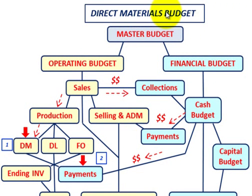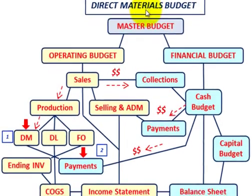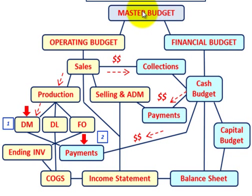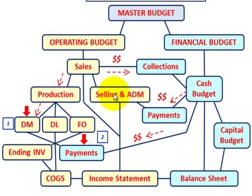We're going to be going over the direct materials budget — how we set it up and make our calculations. Looking at our diagram for the various budgets, we start with the master budget, which contains the operating budget and financial budget. Under the operating budget, we have the sales budget, then the production budget. Based on our production quantities, we can determine our direct material cost and quantities.